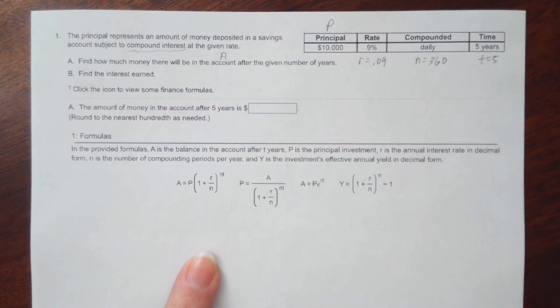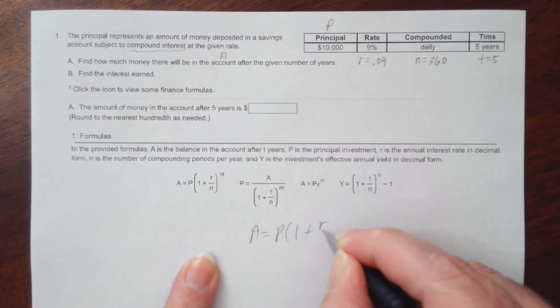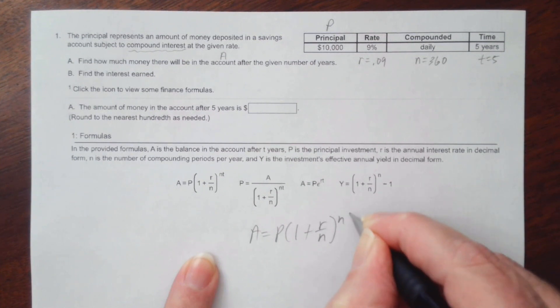So for compound interest, when we put in a lump sum, this is the formula that we use. So let's go ahead and write it down. So we have A equals P times 1 plus R over n to the nt power.